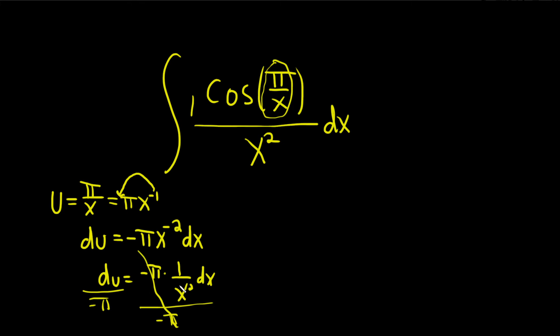The goal is to make this look like what's in our integral. Because there's no negative pi in our integrand, we divide by it. We want to make it look like what's here. So now we have negative 1 over pi du equals 1 over x squared dx. And now you see this matches what's in our integral. We have 1 over x squared dx.